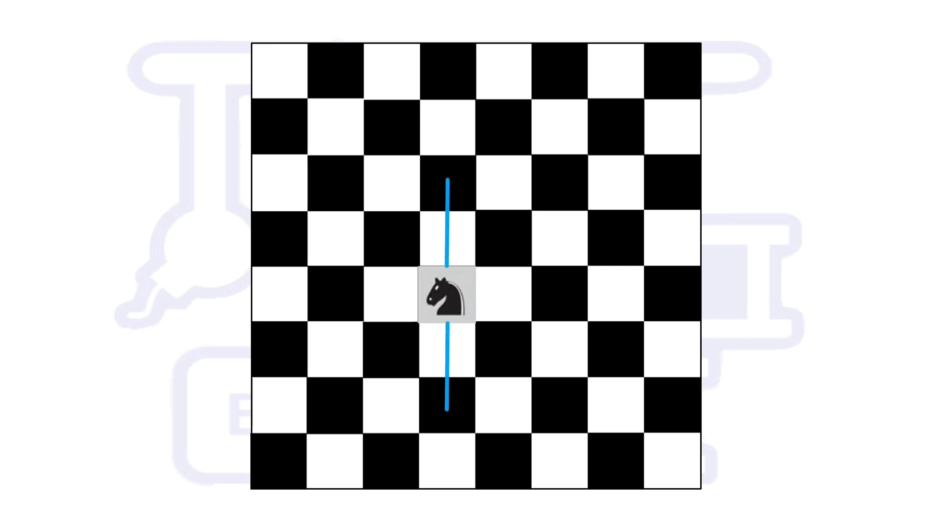Knight can move either 2 steps vertical then 1 step horizontal, or it can move 2 steps horizontal then 1 step vertical in any direction.